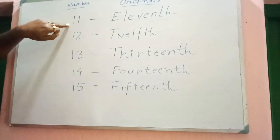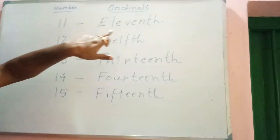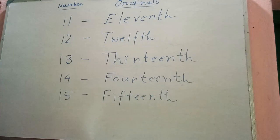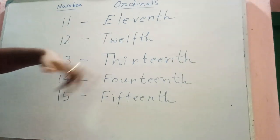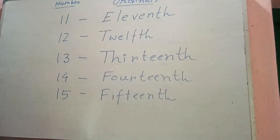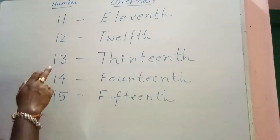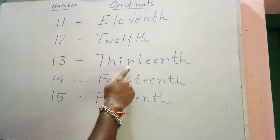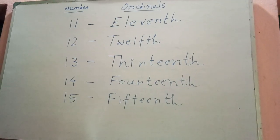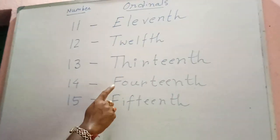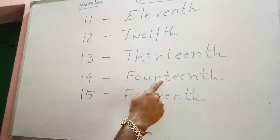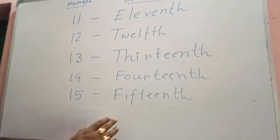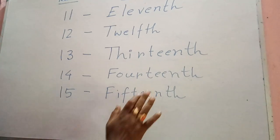Let's repeat once again: number is eleven and ordinal is eleventh — E-L-E-V-E-N-T-H. Number is twelve and ordinal is twelfth — T-W-E-L-F-T-H. Number is thirteen and ordinal is thirteenth — T-H-I-R-T-E-E-N-T-H. Number is fourteen and ordinal is fourteenth — F-O-U-R-T-E-E-N-T-H. Number is fifteen and ordinal is F-I-F-T-E-E-N-T-H.